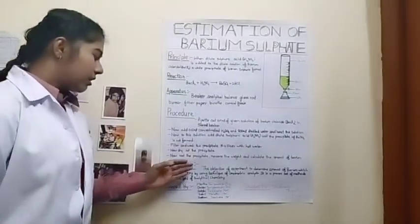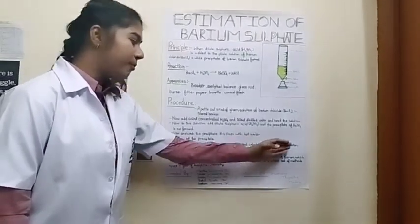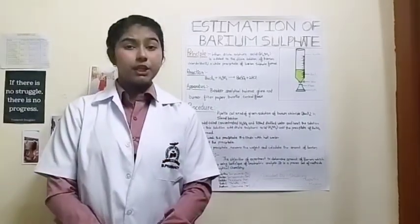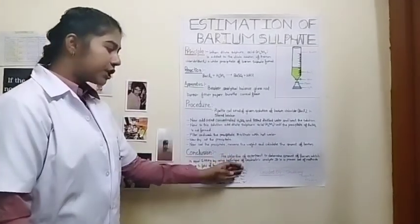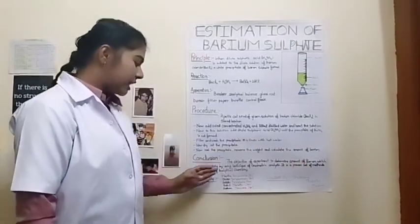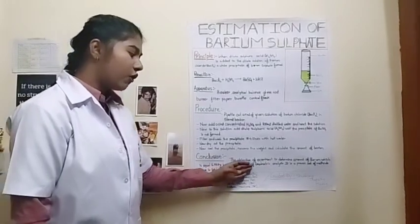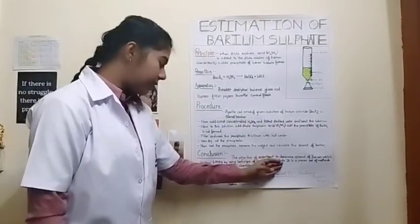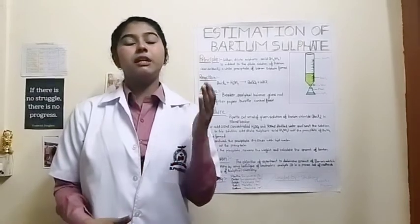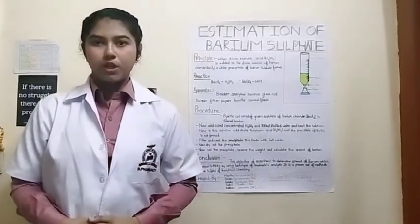Now we can cool the precipitate, measure the weight and calculate the amount of barium which we have gained from this procedure. Finally, we can get the conclusion, which is the objective of our experiment: to determine the amount of barium. The amount of barium chloride is equal to 1.397 gram by using the technique of gravimetric analysis, which is also used in analytical chemistry and inorganic chemistry.